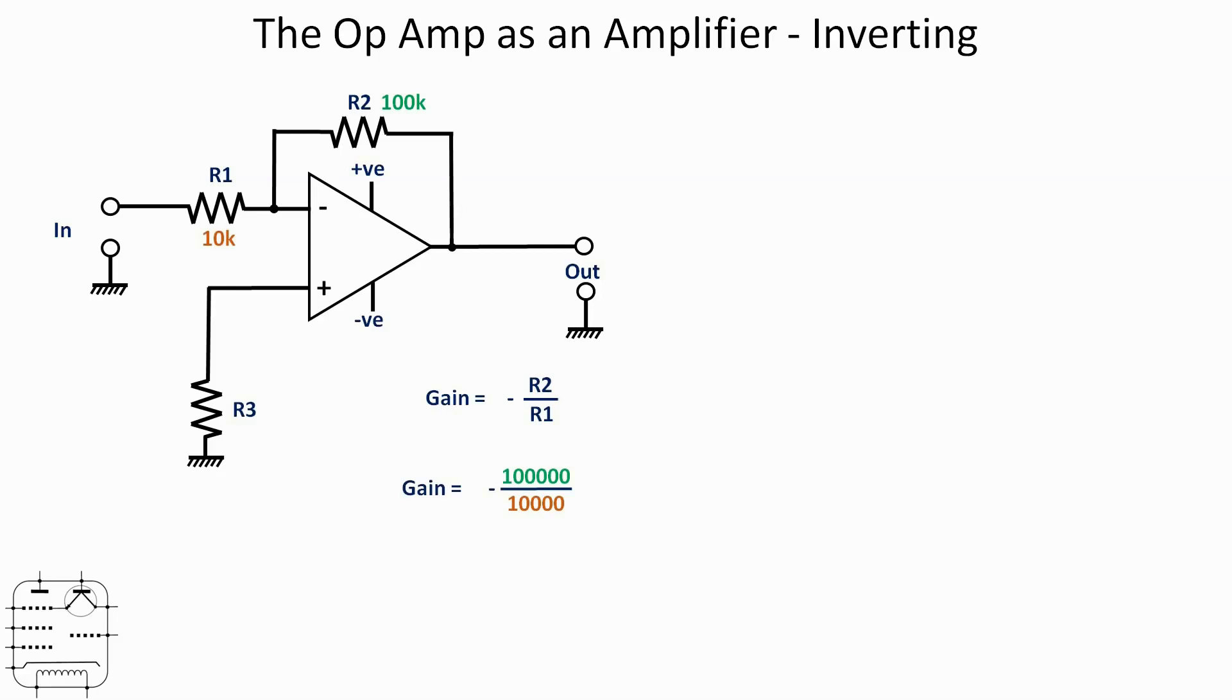So if we use 100k and 10k again, well that gives us the formula minus 100,000 over 10,000, which gives us a gain of minus 10.